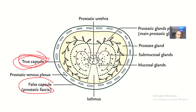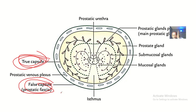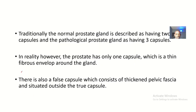We have the true capsule, which is a thin fibrous layer surrounding the prostate gland. Then we have the false capsule, which is like an extraperitoneal layer that is surrounding the true capsule. As it surrounds the true capsule, it is continuous with the fascia of the bladder and the Denonvilliers' fascia — which separates the prostate gland and the bladder from the rectum posteriorly. Between the true capsule and the false capsule is where we have the prostatic venous plexus.